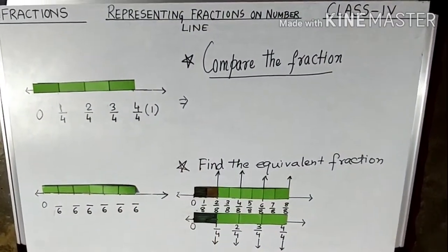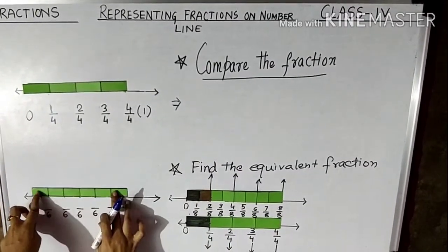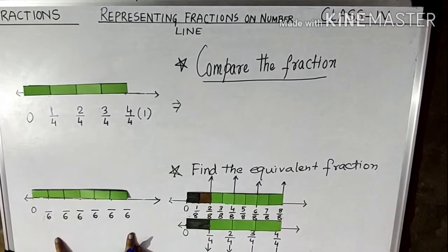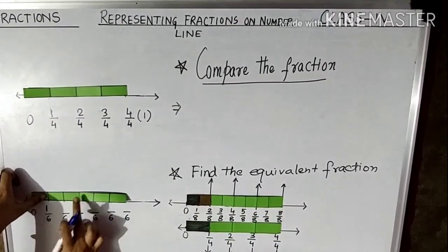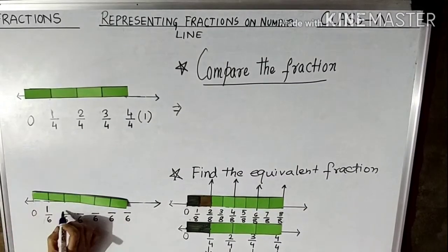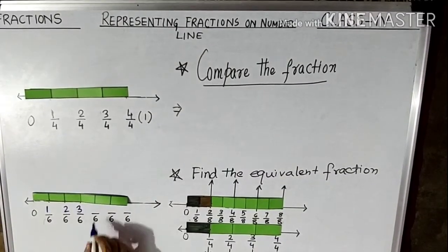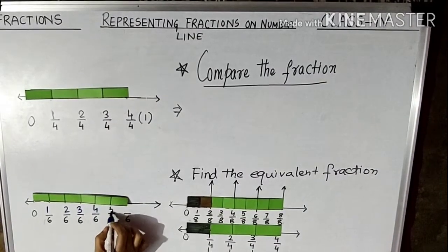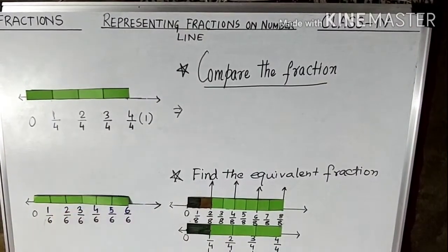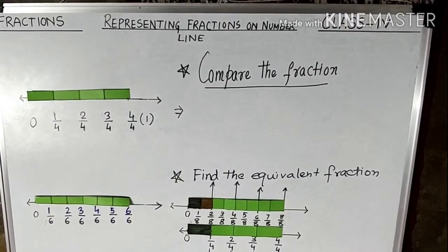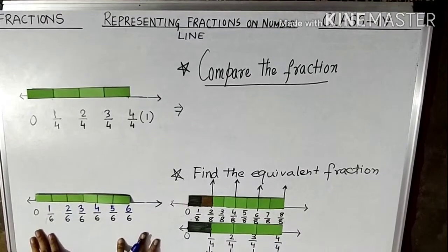Here I have also divided this number line into 6 equal parts. The first part is 1/6, the second is 2/6, the third is 3/6, then 4/6, 5/6, and the last is 6/6. As you can see, I have drawn the fractions on the number line.